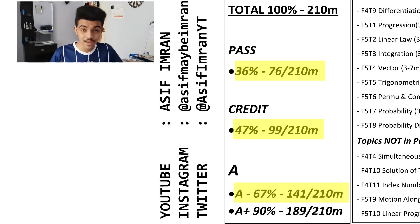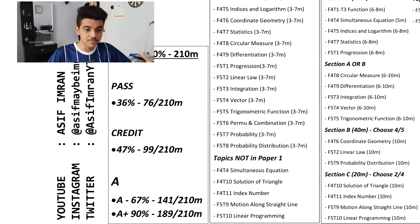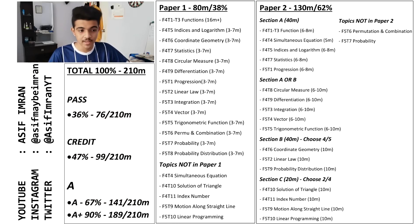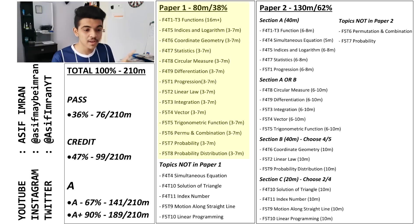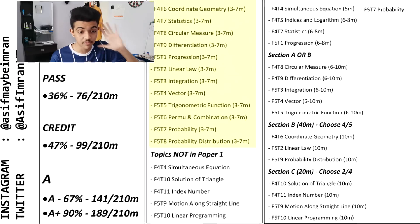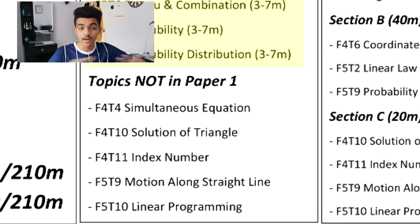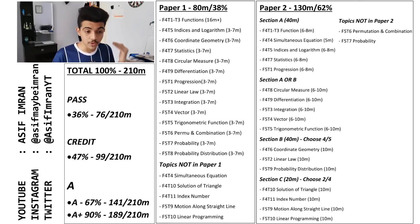Anyways, now I'll explain the format. I've made this table to help me explain my tactics. KSSM students can also try to use these tactics for your syllabus — leave a comment down below if you want me to make a separate video for you guys. For Paper 1, there are 25 questions with no choices, and questions will be based on every topic except for five specific ones. So for Paper 1, forget about those five topics.